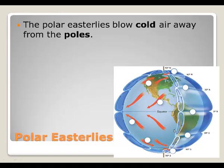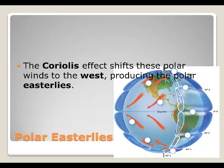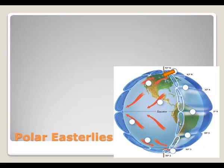The polar easterlies blow cold air away from the poles. Air near the poles sinks and flows back towards the lower latitudes. The Coriolis effect shifts these polar winds to the west, producing the polar easterlies. Remember that winds are named based on the direction they come from.